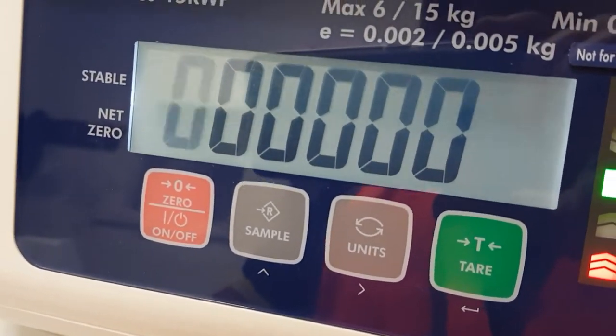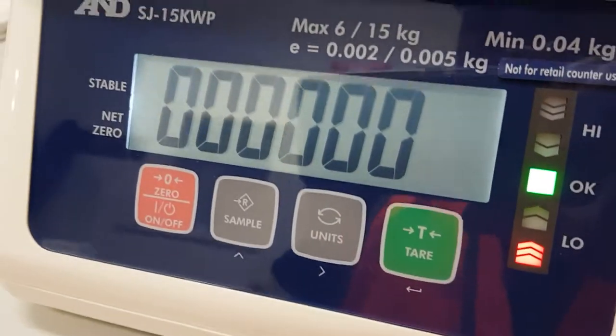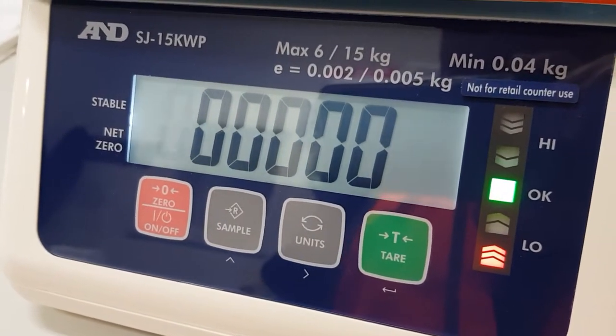You can see at the moment there's six digits on the screen. This particular scale is a 15 kilo version. We have it set up in our non-weights and measures mode, which means it actually measures up to 15 kilos by one gram, so 15,000 grams.